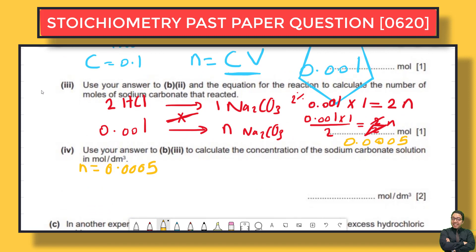We also have the volume from the question: V = 16.2 cm³. We need to convert this to dm³, so: V = 16.2 ÷ 1000 = 0.0162 dm³.